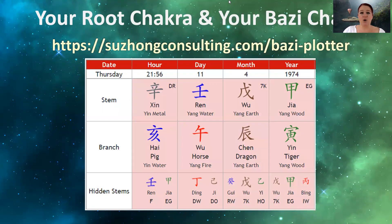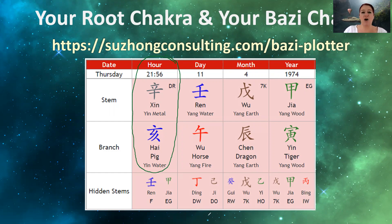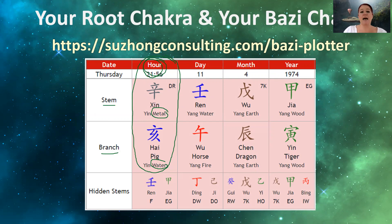What we are mostly curious about is this pillar here — this is what we call the hour pillar. So once you have plotted your chart, you will get something like this. We focus on the pink or rose-colored part of this chart. Within the chart, we are looking at the hour pillar. Don't worry about the Chinese characters — what we are curious about are the elements. There will be one element on top and one at the bottom: a stem element and a branch element. We have metal on top and water at the bottom, as an example.